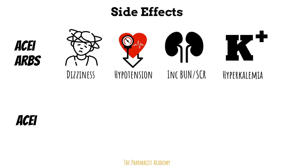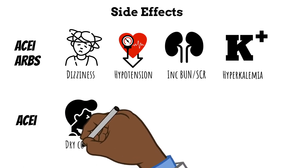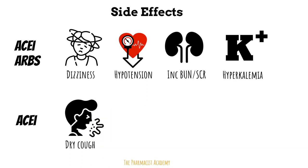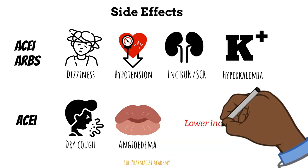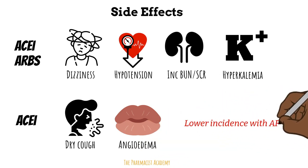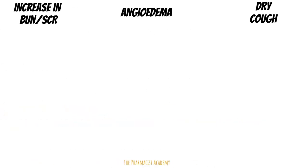ACE inhibitors are the main ones known to cause a dry hacking cough, a side effect that can impact the patient's adherence. They can also cause angioedema. ARBs have a much lower risk of causing these, and we will discuss the mechanism to get a better understanding of why.